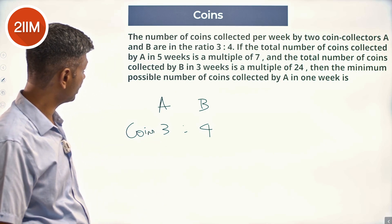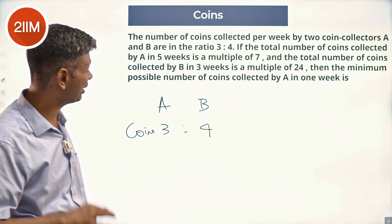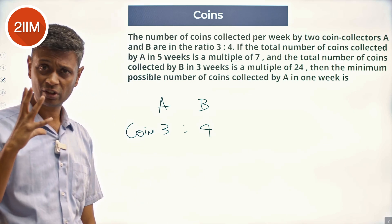The total number of coins collected by A in 5 weeks is a multiple of 7. So this is coins per week, 5 weeks is a multiple of 7.